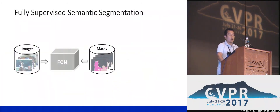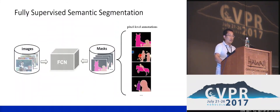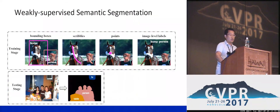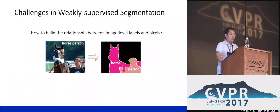Currently, the success of fully supervised FCN-based semantic segmentation approaches are very data-hungry, which rely on a large number of segmentation masks. However, labeling a large number of images is very costly in terms of both finance and human effort. To relieve the demand for expensive pixel-level annotations, weakly supervised information such as bounding boxes, scribbles, points, and image-level labels are proposed to provide some promising solutions. Among this information, the simplest and most efficient one that can be collected for training is image-level labels.